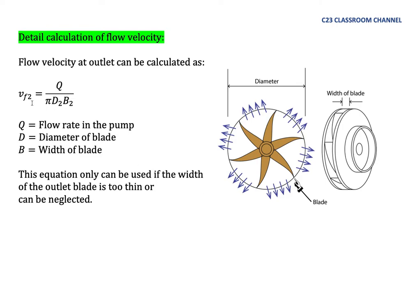Please remember that the equation vf2 equals Q over πD2B2 is actually valid for a blade that has a very thin thickness at the outlet here.